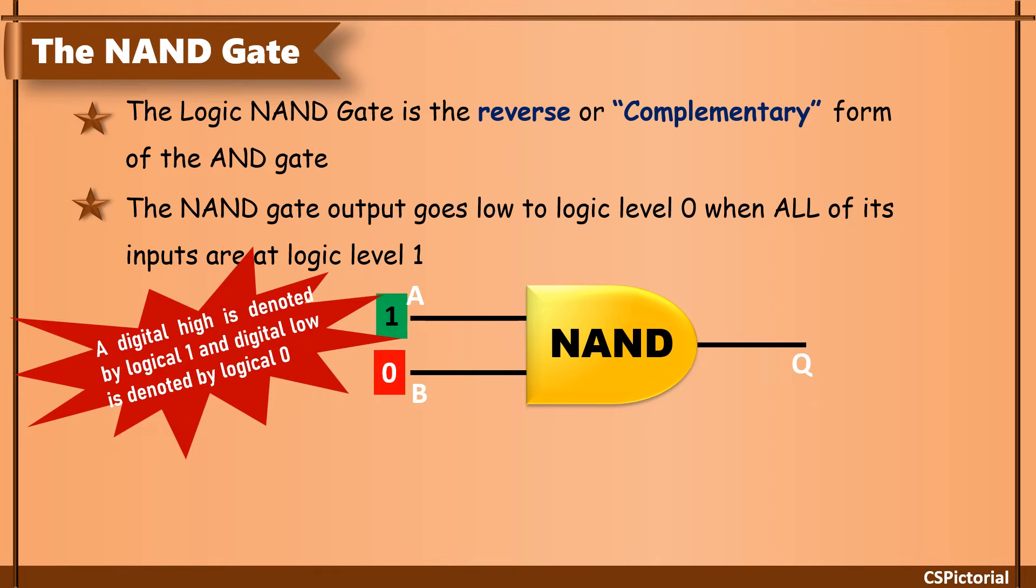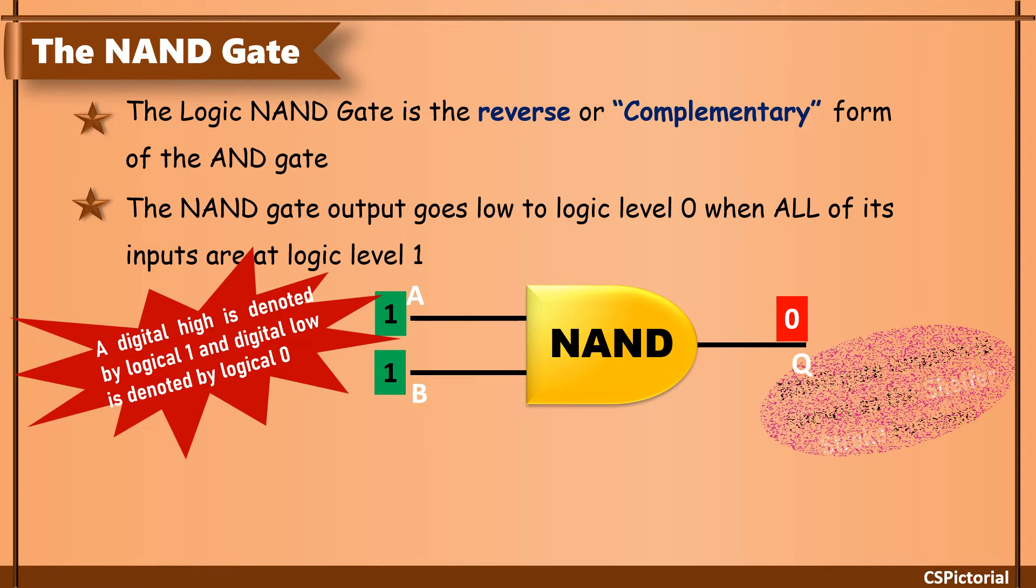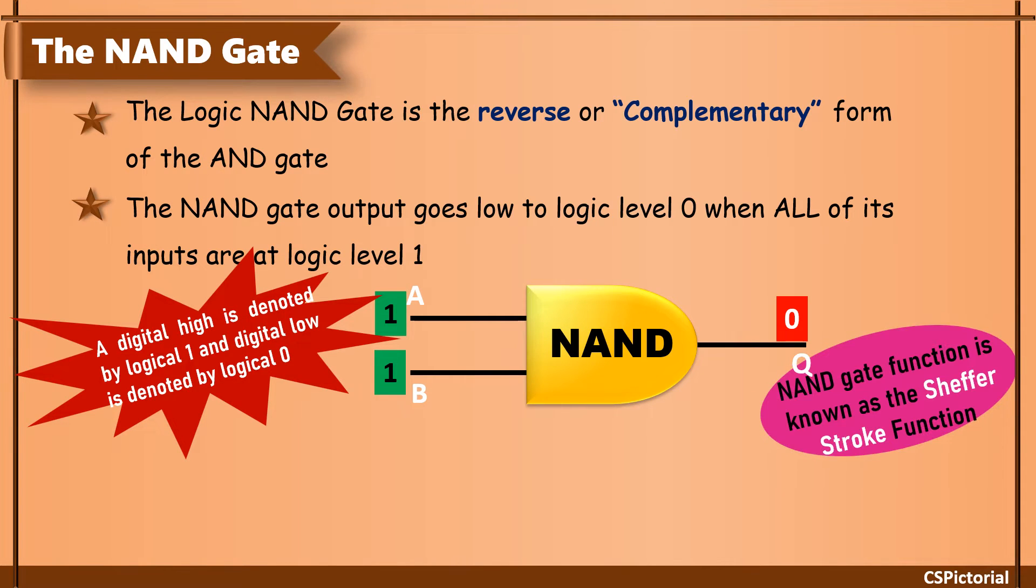When both A and B are 1, the output Q is 0. The logic NAND gate function is sometimes known as the Schaeffer stroke function. Kindly remember this information which might sometimes be asked in competitive exams.